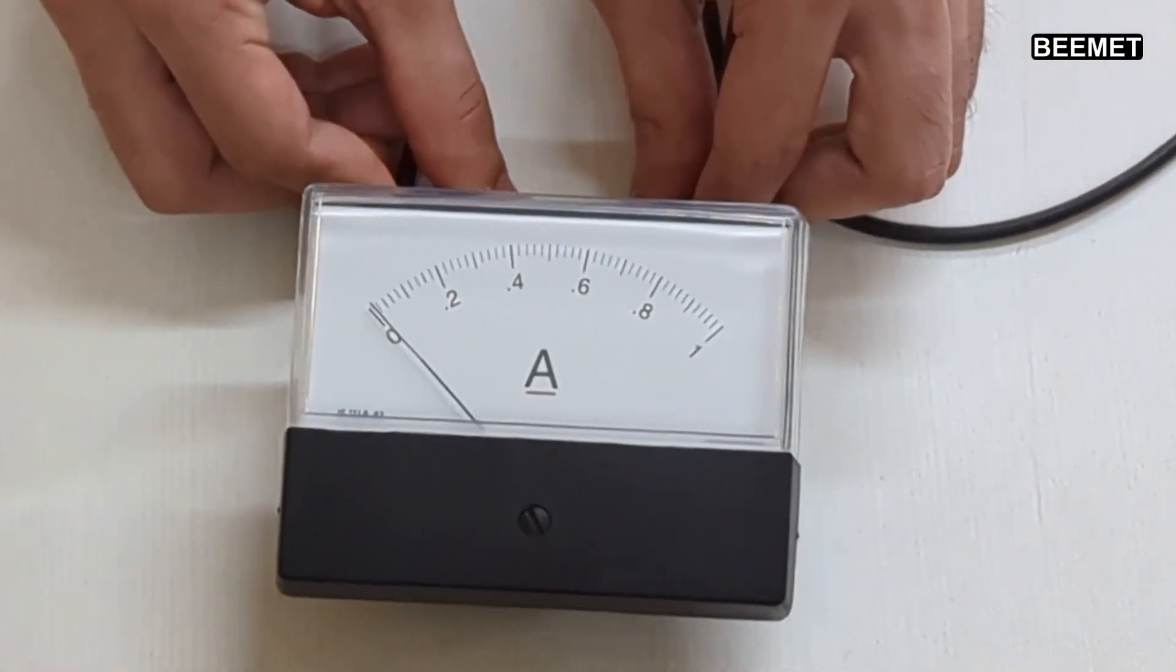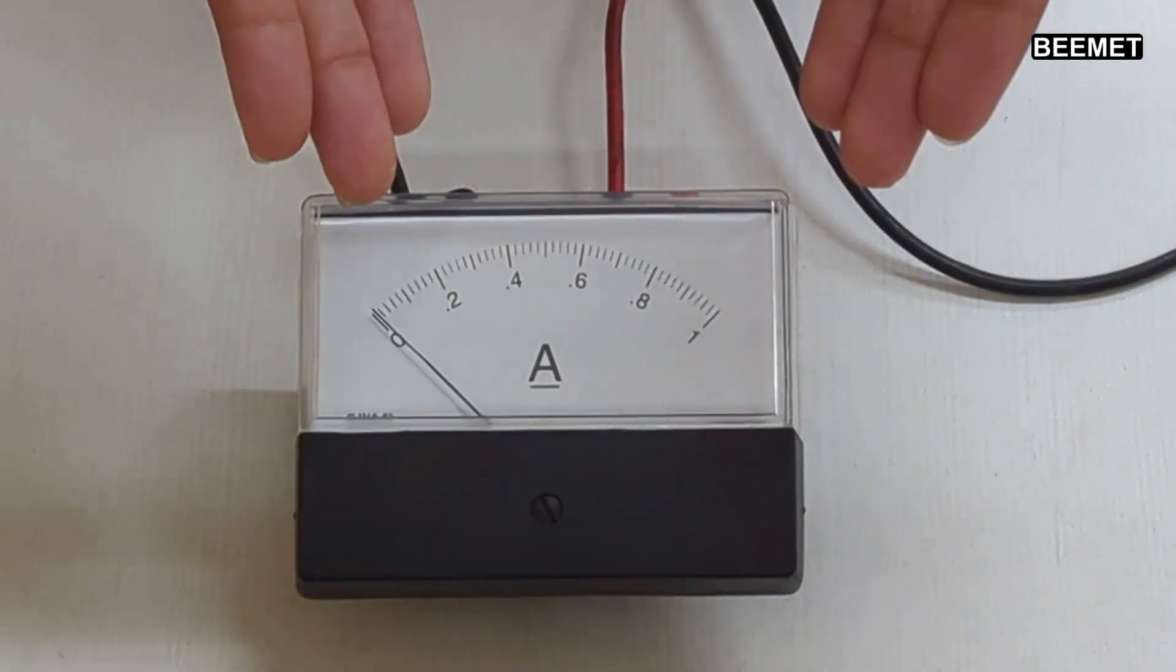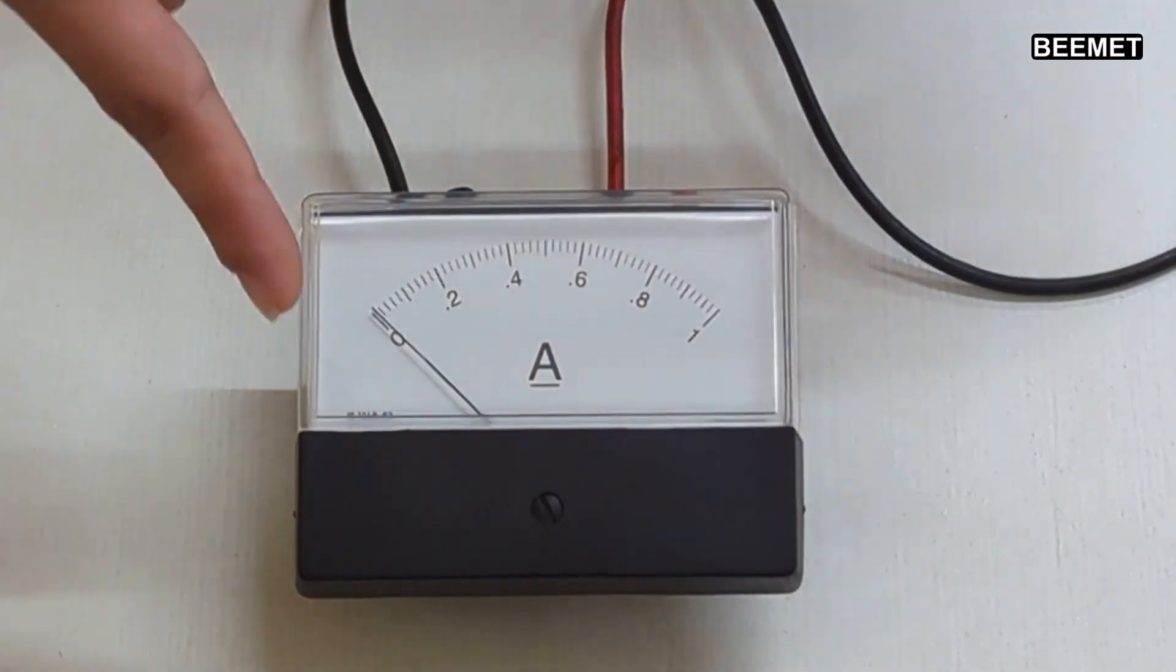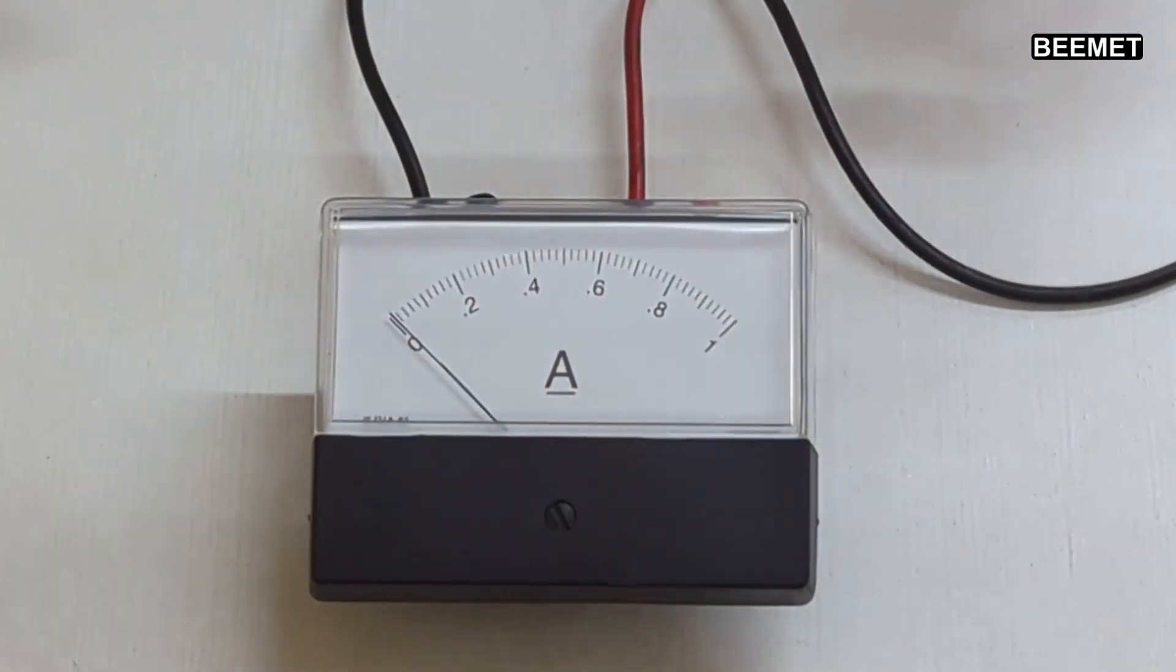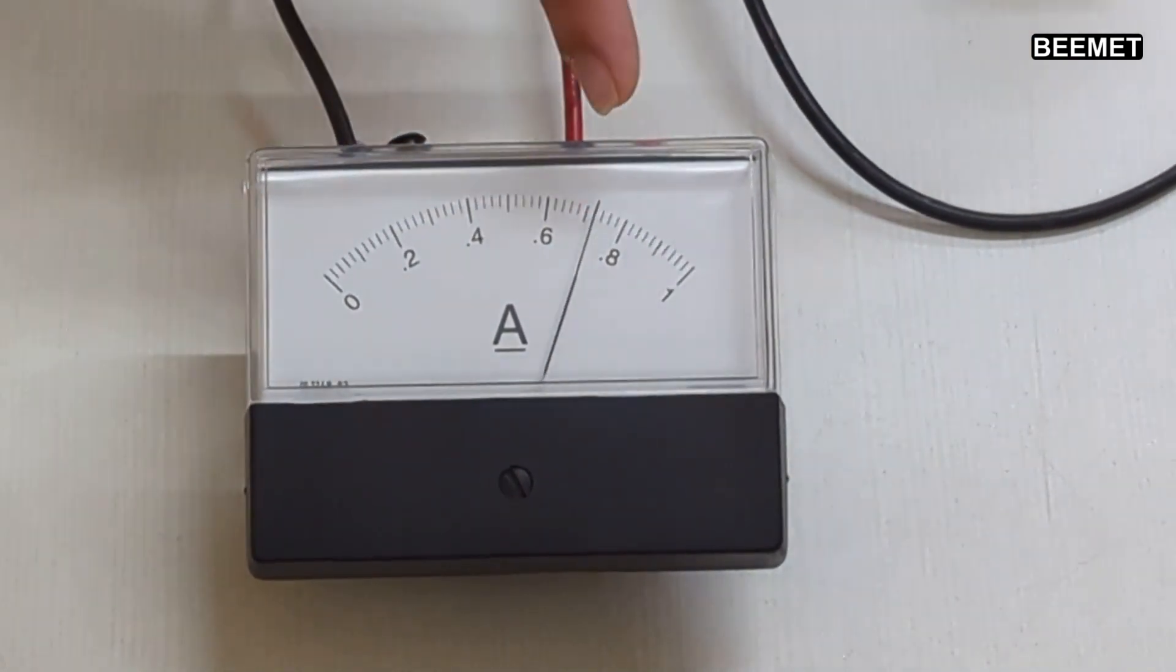To measure current, the ammeter is connected in series with the circuit. The current flowing through the circuit also flows through the ammeter, causing the needle to deflect. The amount of deflection of the needle is proportional to the amount of current flowing through the circuit.